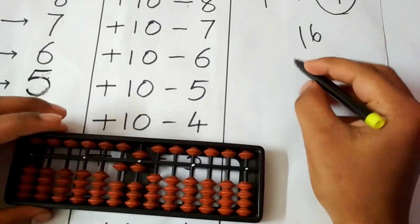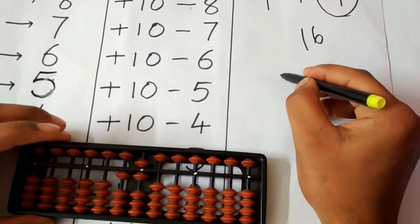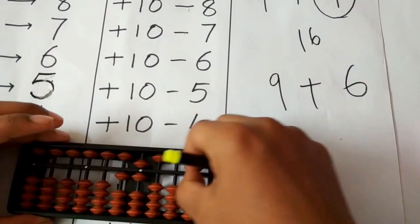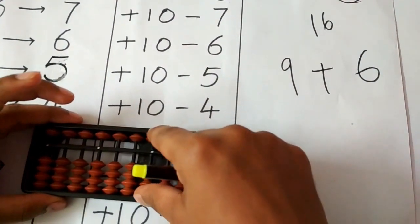Let us try to add other set of example that is 9 plus 6. Step 1 is as usual, place 9 on the abacus.